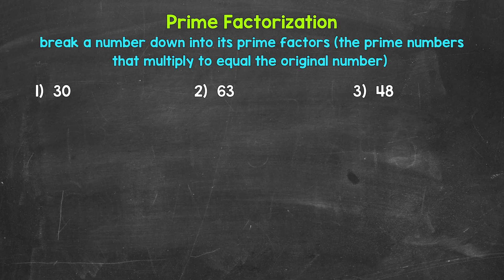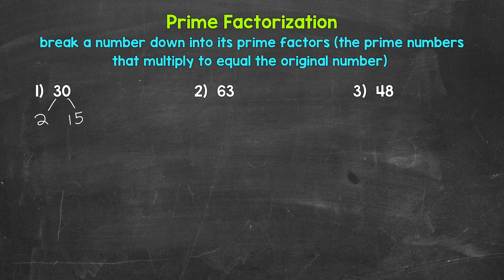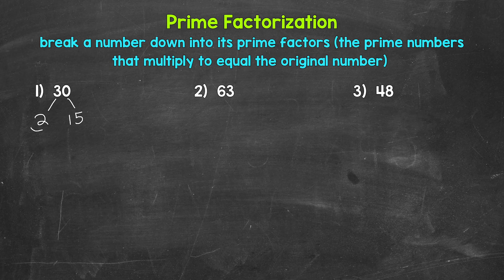2 and 15 are factors of 30. 2 times 15 equals 30. So let's break this down into 2 and 15. You may be thinking, 5 times 6 equals 30 as well — could we have done that? Absolutely, that works too. Depending on the number we are working with, there can be different paths we can take, and it does not matter if 2 is on the right and 15 is on the left. We will get the same prime numbers either way. Now, 2 is a prime number — the only factors are 1 and 2 — so 2 cannot be broken down anymore. I'm going to circle 2 to show that we have a prime number there.